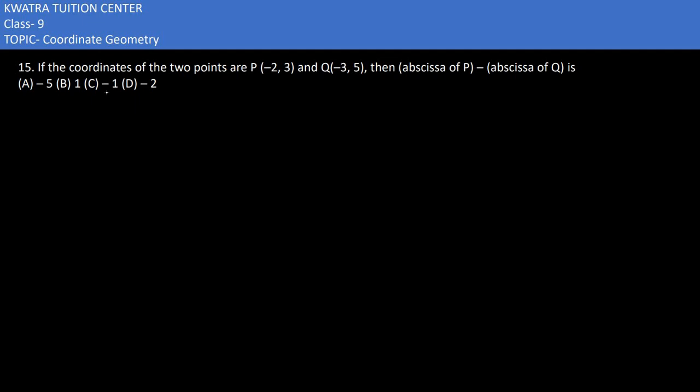15th problem: If the coordinates of two points are P(-2, 3) and Q(-3, 5), then find abscissa of P minus abscissa of Q. Now if we notice, P ka abscissa kya hai - this is the x-point, the x-coordinate.